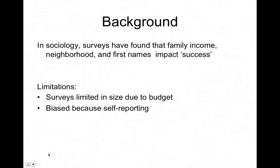Surveys have found that family income, neighborhood, and first names impact success. Other things that can matter are whether parents are divorced or stay married, or also their education. These studies have looked at what features might impact a person's success, but the limitations are that they're limited in size due to budget. Often they ask what success is by surveying people, and it's biased because of self-reporting — people are more likely to say they're successful than they really are.